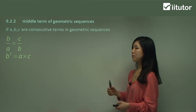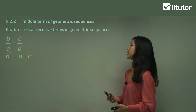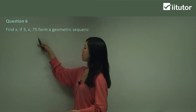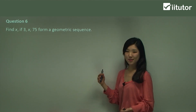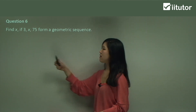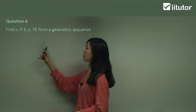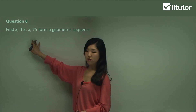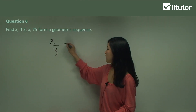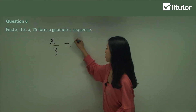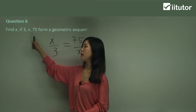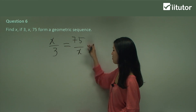Now let's use this in our questions. Question 6 says: find x if 3, x, 75 form a geometric sequence. So 3, x, 75 is a geometric sequence and we want to find that middle number x. To find the common ratio, we can go x divided by 3, that's the common ratio, and that's also equal to 75 divided by x — there's always the next number divided by the previous number.